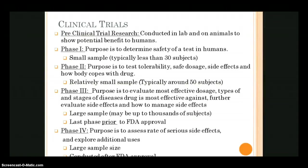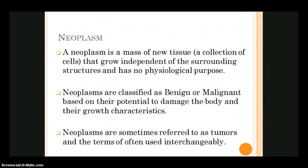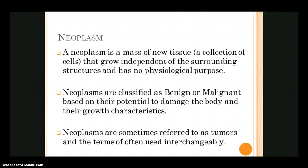A neoplasm — I've given you the definition. I want you to know that neoplasms are often considered autonomous because they grow at a rate not coordinated with the needs of the body. Normally we create new cells when we need them, but neoplasms just do whatever they want, unassociated with the body's needs, and they don't benefit the individual and can harm them. However, neoplasms are not totally autonomous because they still require a blood supply and the nutrients and oxygen it provides in order to grow.